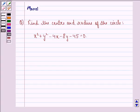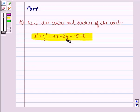Hello and welcome to the session. My name is Mansi and I am going to help you with the following question. The question says find the center and radius of the circle x square plus y square minus 4x minus 8y minus 45 equals to 0.